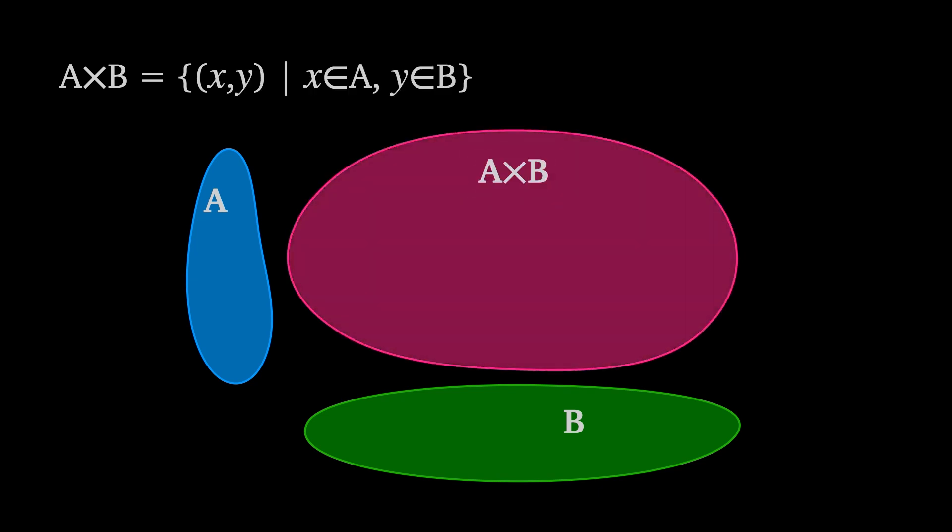Given a set a and a set b, the product of a and b, a cross b, is the set of all ordered pairs x and y, such that x is in a and y is in b. That is, for all elements x in a and y in b, there'll be a corresponding element xy in a cross b.